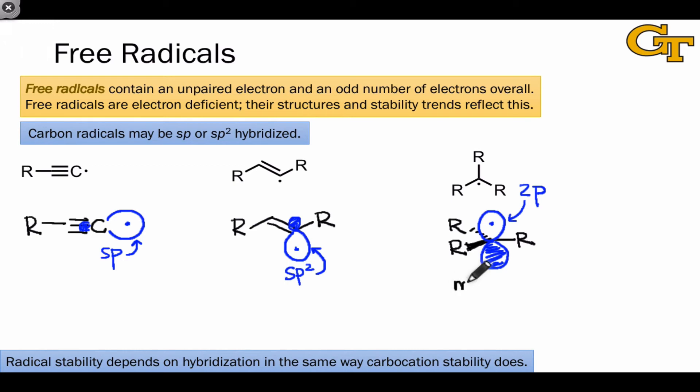The most stable radicals are those in which the unpaired electron is located in a 2p orbital, highest in energy. The least stable radicals are those in which the unpaired electron is located in an sp hybrid. This hybrid orbital has the lowest energy, and so it's most susceptible to attack by electron-donating molecules or nucleophiles.